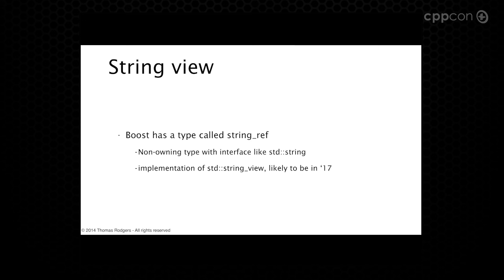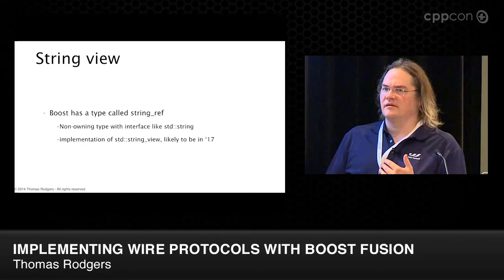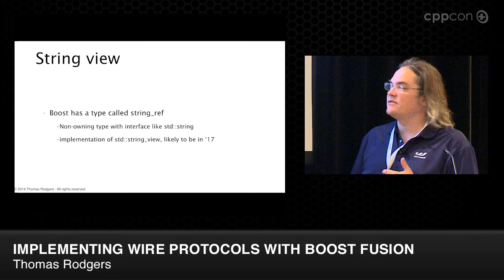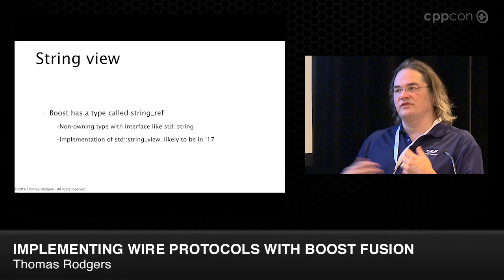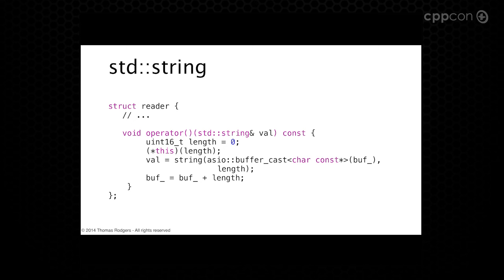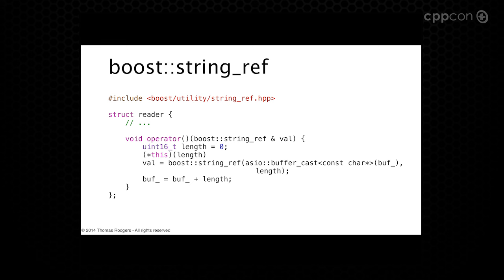Boost has a type called string_ref, written by Marshall Clow — it's a non-owning type with an interface like std::string. Jeffrey Yaskin put together a proposal called string_view, which is likely to be in C++17. In our case, we use string_ref as a non-copying marker: we saw a string here in the underlying buffer, record its location and length, and give it a standard string-like interface. Making our string implementation use string_ref is straightforward: read the length, construct the string_ref from a const char* cast of the buffer with that length, then advance the buffer.